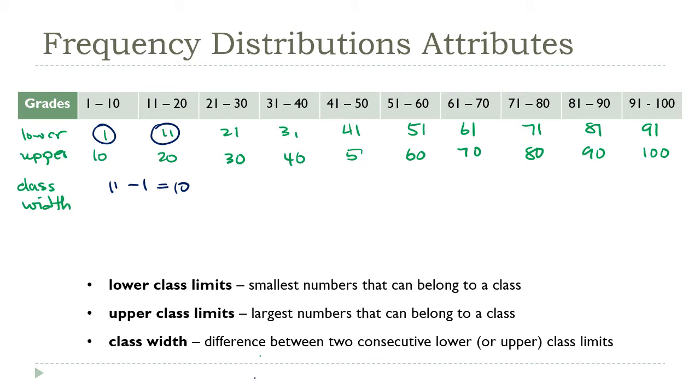Now, you could do the same thing with two consecutive upper bounds, and you should still get the same result. For example, 20 minus 10 is also 10. The class width should be the same for every class size.